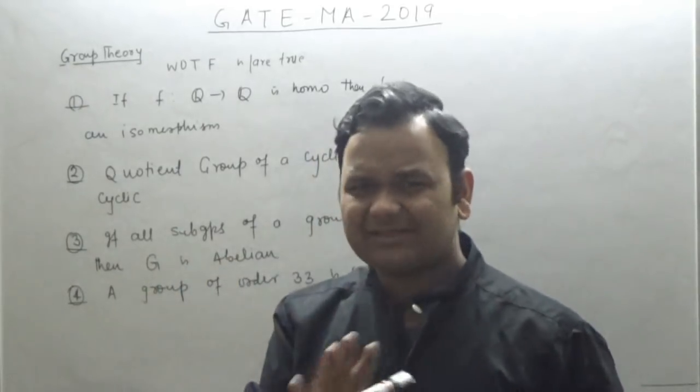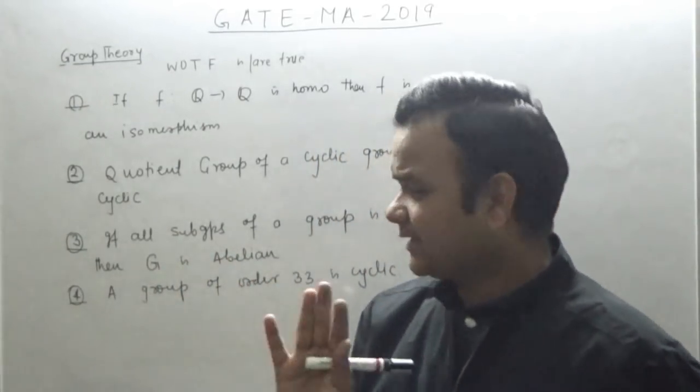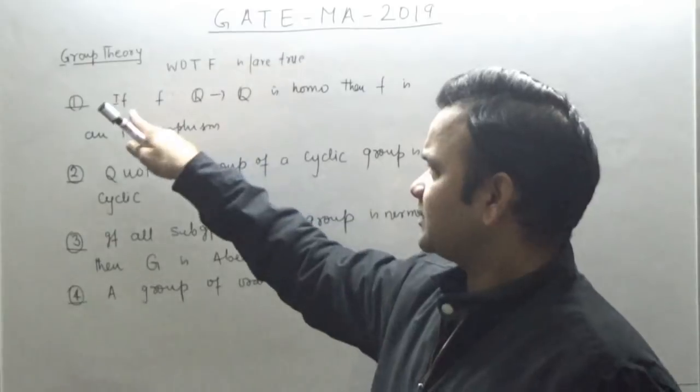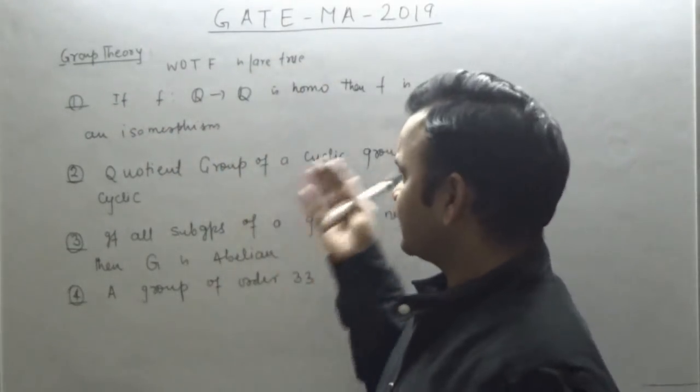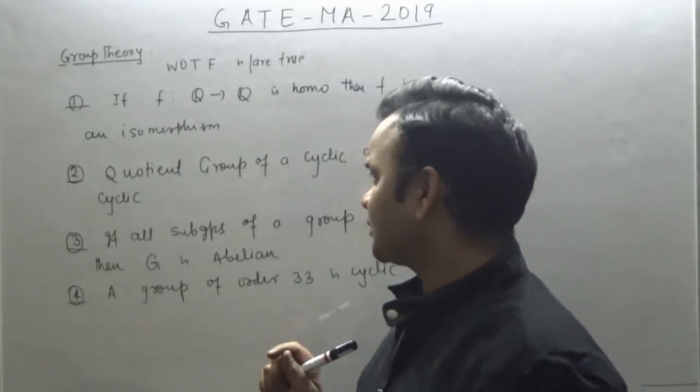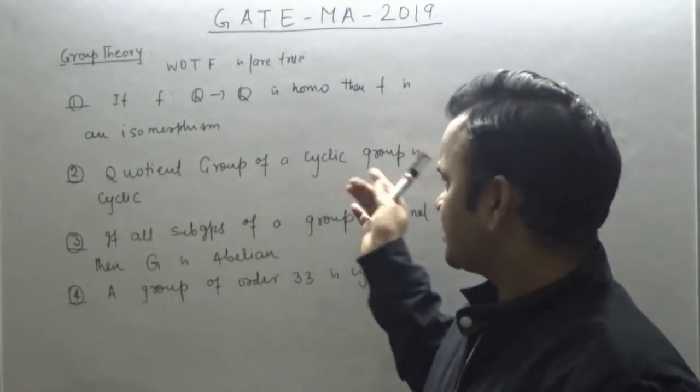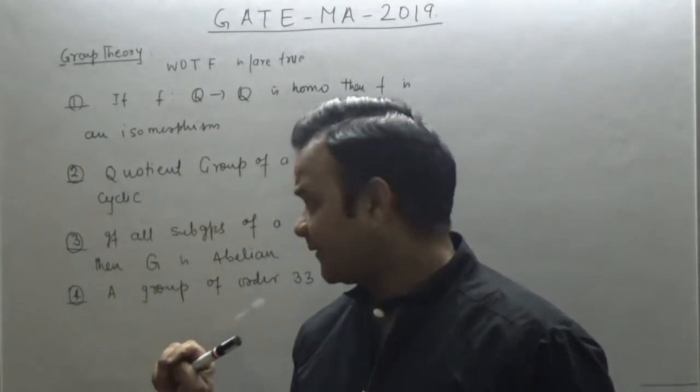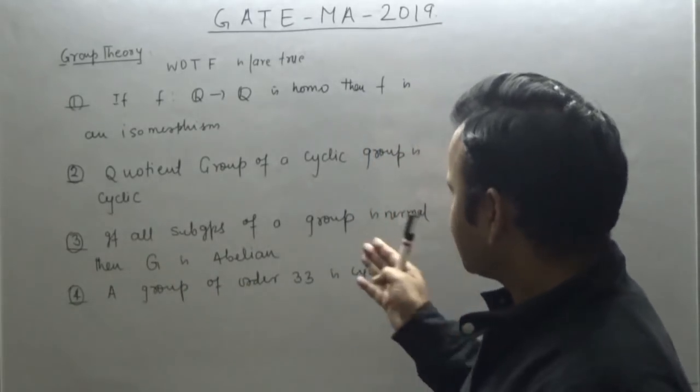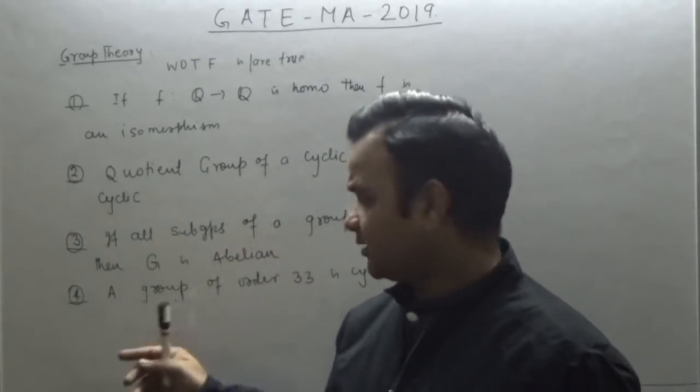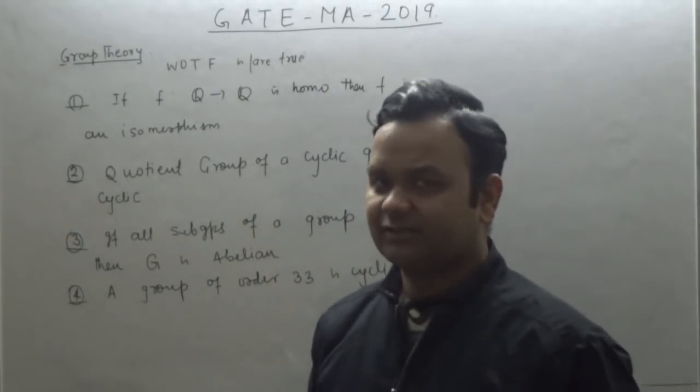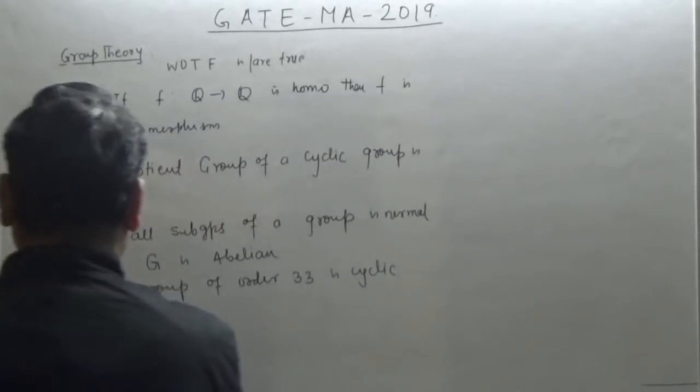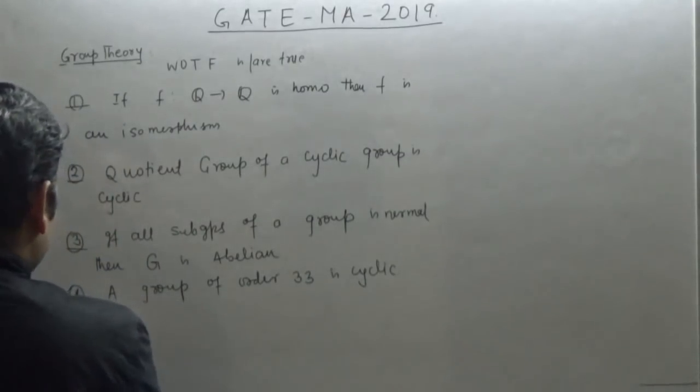First, if f from Q to Q is a group homomorphism, then f is an isomorphism. Second, quotient group of a cyclic group is cyclic. Third, all subgroups of a group are normal, then G is abelian. And fourth, a group of order 33 is always cyclic.